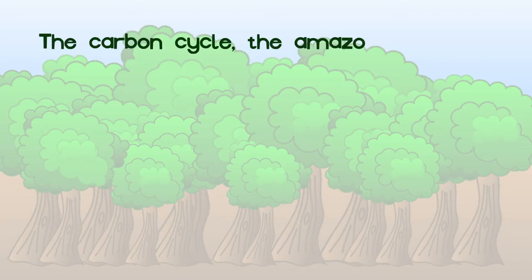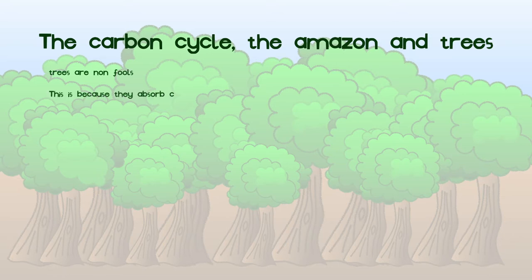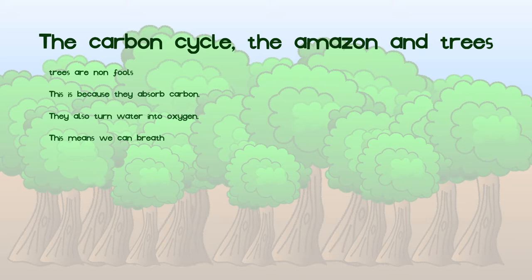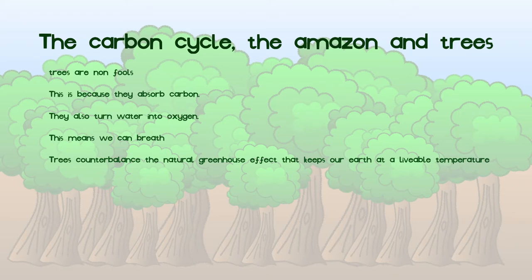The first slide is on the carbon cycle, the Amazon and trees. I have concluded that trees are non-fools. This is because they absorb harmful carbon from the atmosphere. They also turn water into oxygen. How good for breathing, as oxygen allows us to breathe.